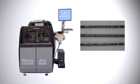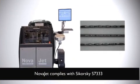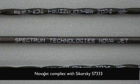As a result, Spectrum now offers NOVAJET, an inkjet wire marker based on the NOVA platform to mark black and other non-laser markable wires.